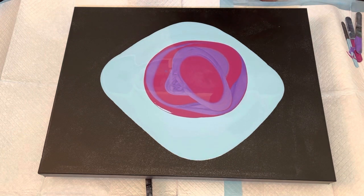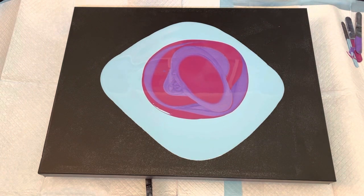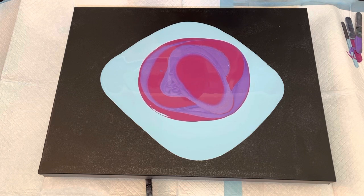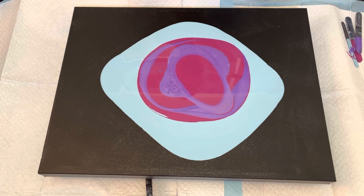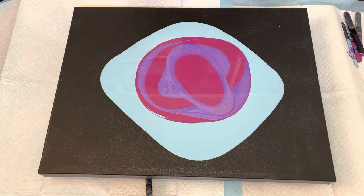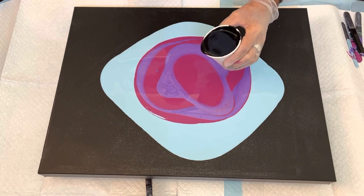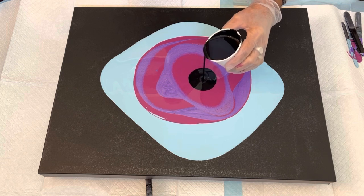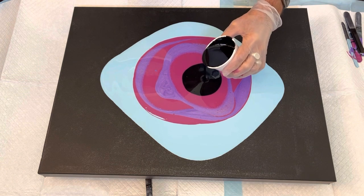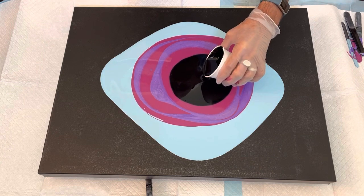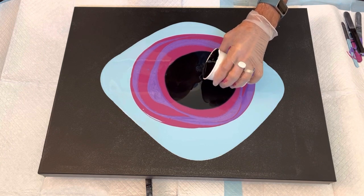Last but not least, we're gonna go with the Artist's Loft Soft Body Black on top, and then we'll move it around. So I'm not gonna dump this, I'm just gonna pour it sort of in the middle, nice and simple. Oh, I just saw a big lump go in there. Hopefully I can get that lump before it messes up the composition.